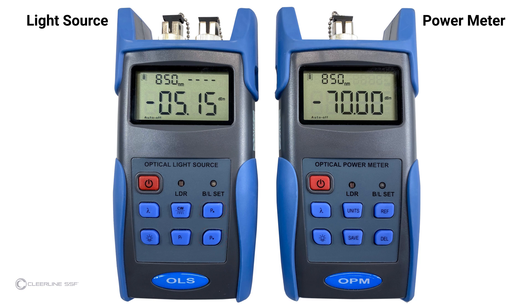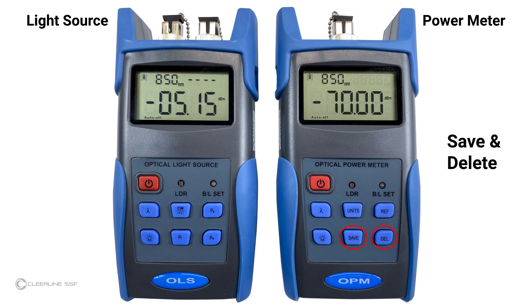Keys specific to the power meter are: units; reference, which sets the current power value in decibel milliwatts (dBm) as the reference value; and save and delete keys, which allow you to save or delete records.